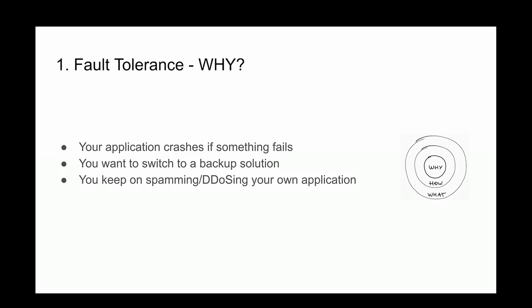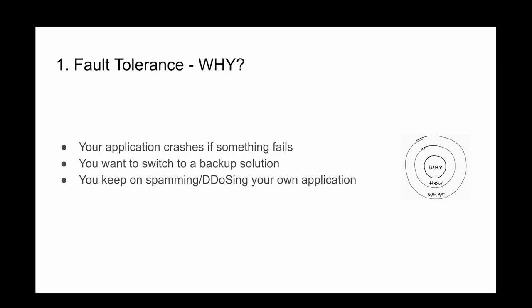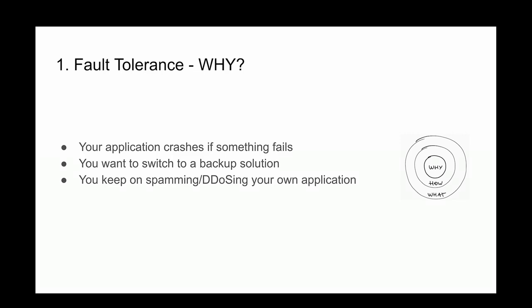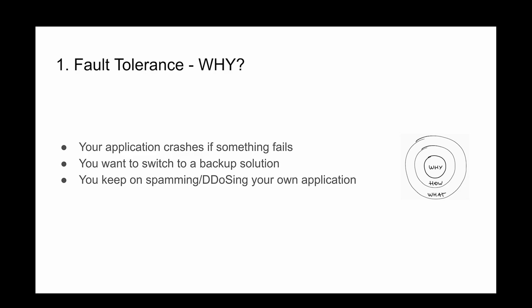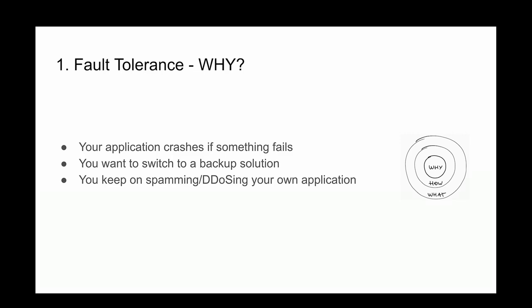Another problem is that when services inside a company's network go down, teams end up DDoSing themselves — sending too many requests to their own downed services and taking down the whole network. I work at a customer where if they don't scale down their Kubernetes cluster when something goes wrong externally, they end up DDoSing themselves. They actually have to go into Kubernetes, scale it down and gradually scale it back up to avoid that.